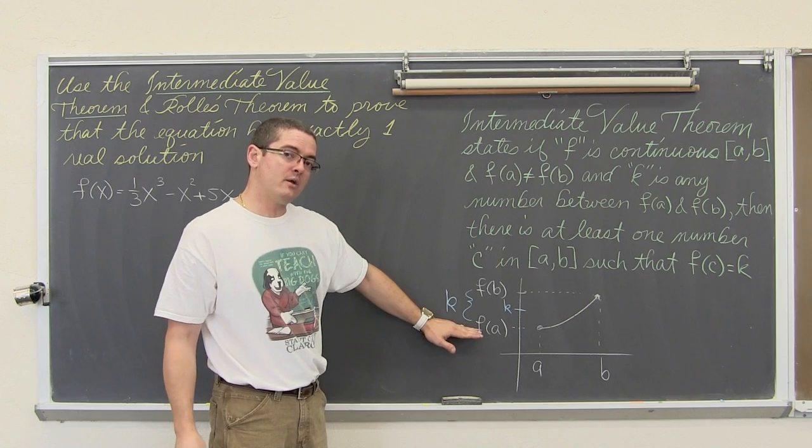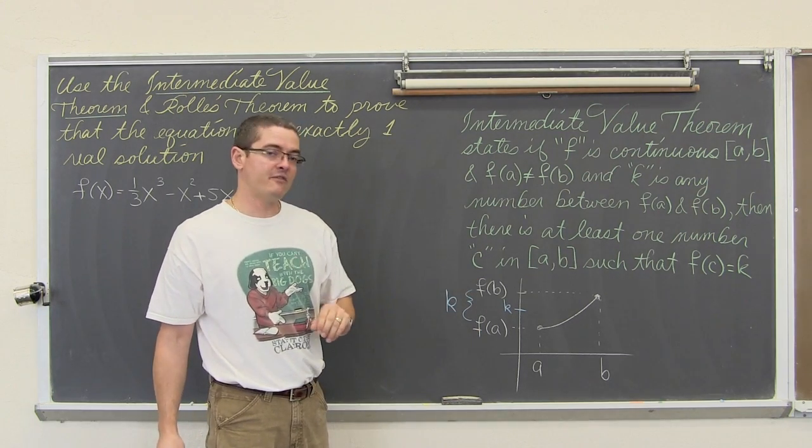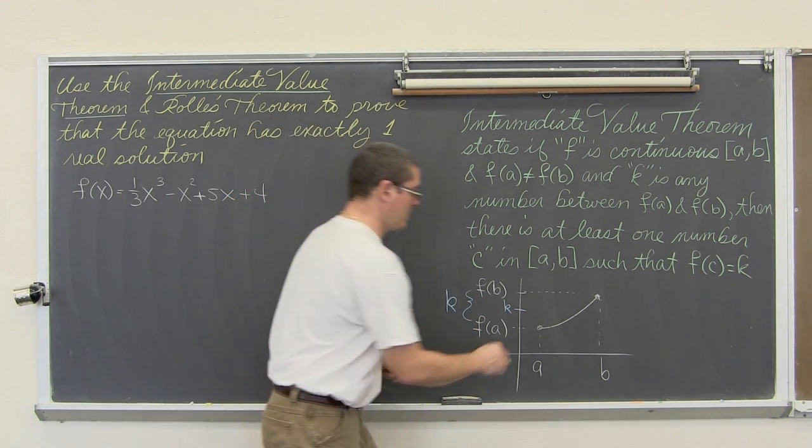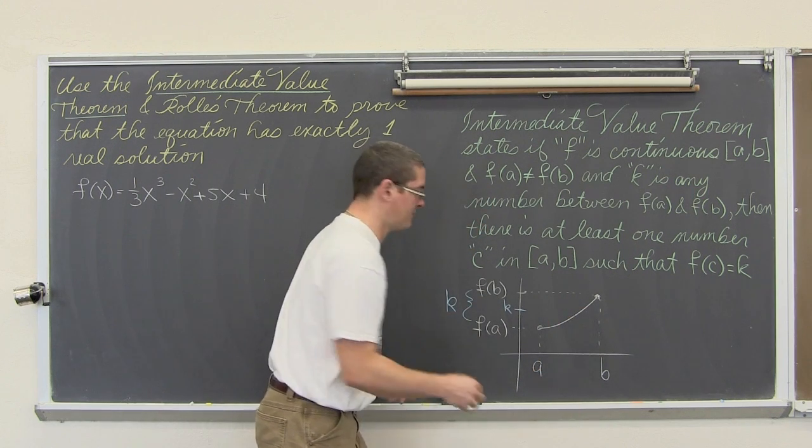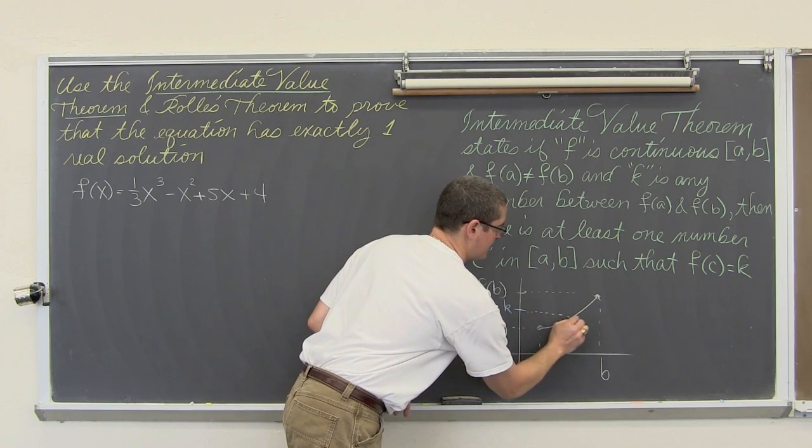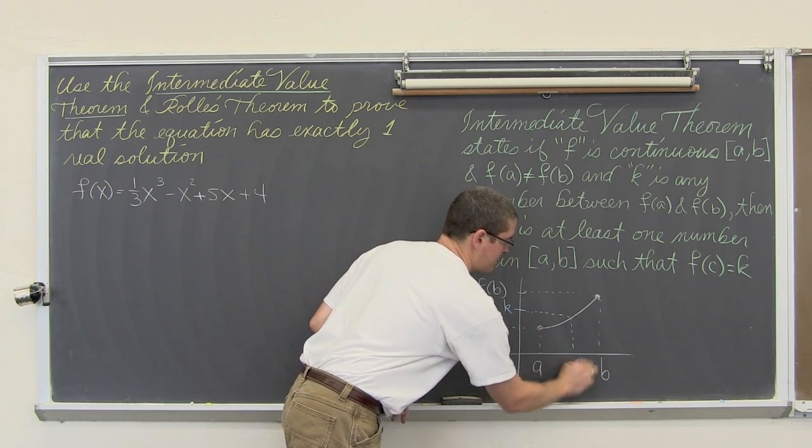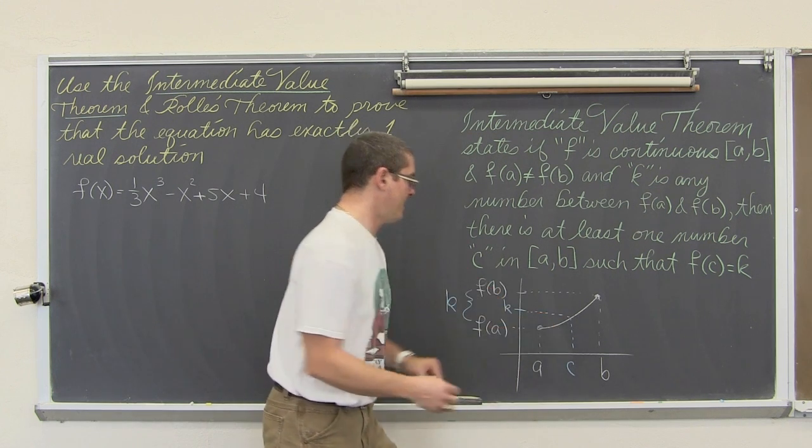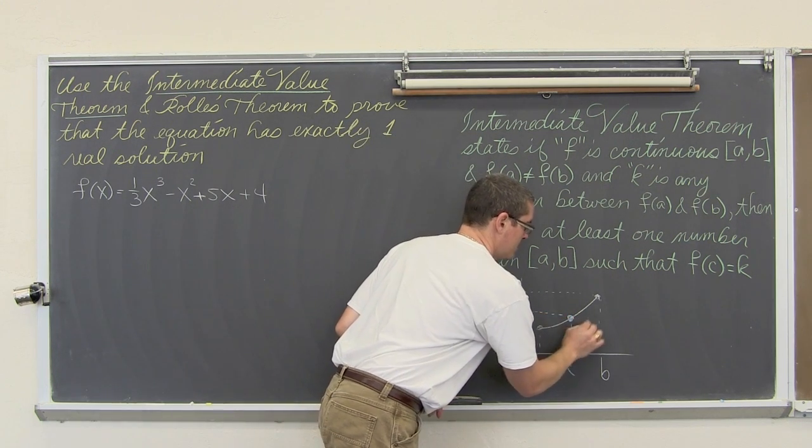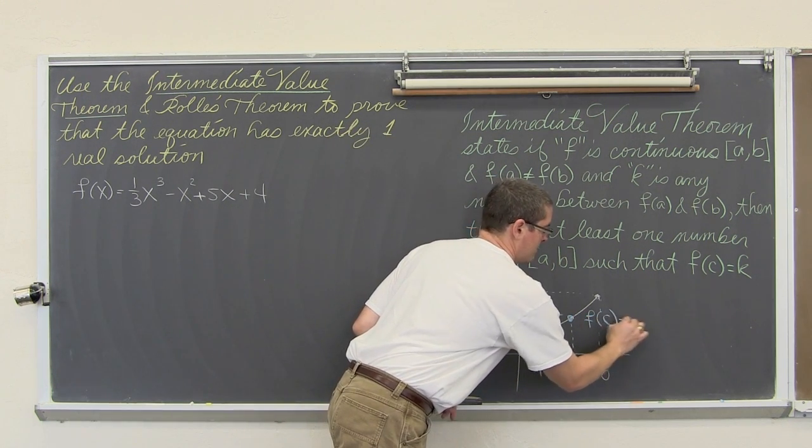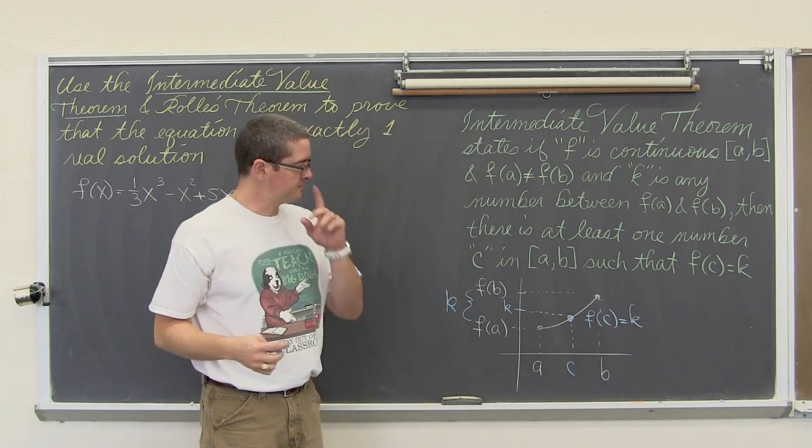Such that f of c is equal to k. So here we have a y value of f of a, we have a y value of f of b. So k is somewhere in the middle, and therefore if this is a smooth and continuous curve, there must be some value of c such that f of c is equal to k.